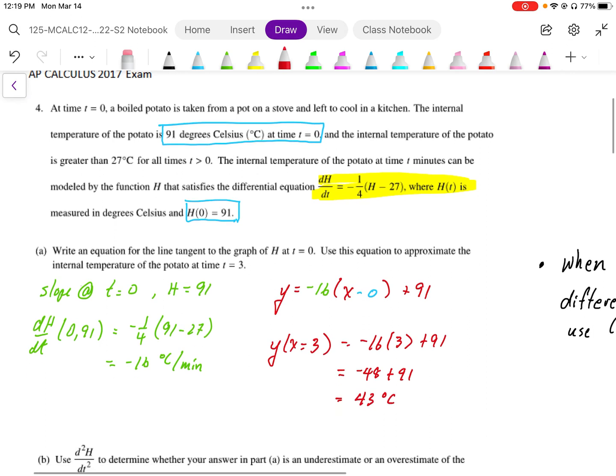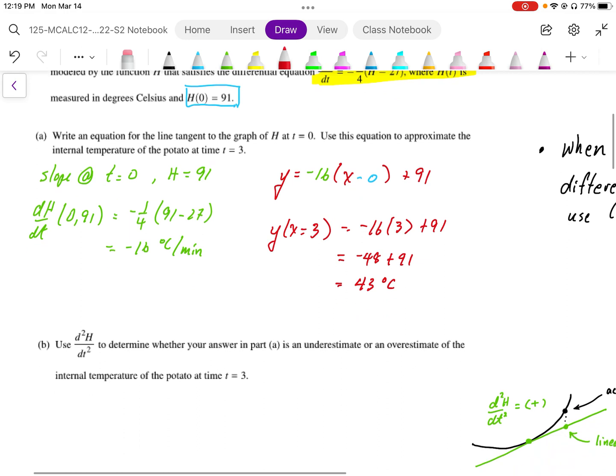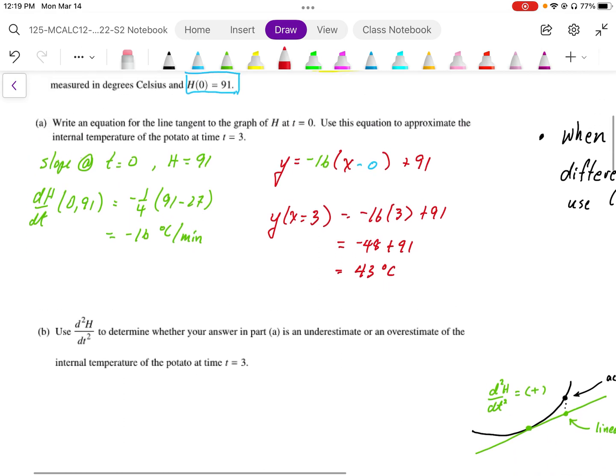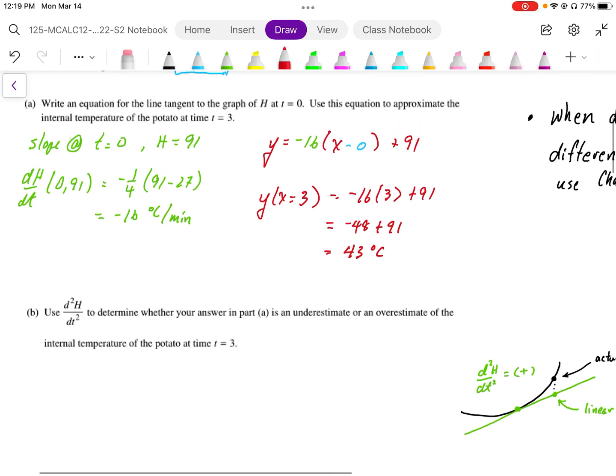That's the first part. We're using this tangent line to approximate the value on the curve. The second part says use d squared H over dt squared to determine whether your answer in part A is an under or overestimate of the internal temperature.